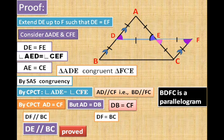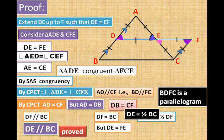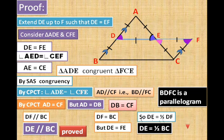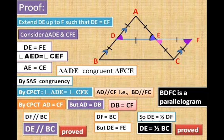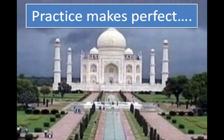Now for the equality part: DF equals BC (opposite sides of the parallelogram). Since DE equals EF, DE is half of DF. Therefore DE equals half of BC — the second part is also proved.